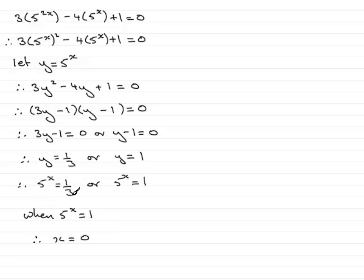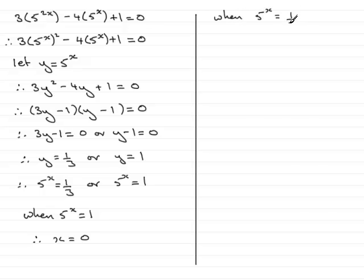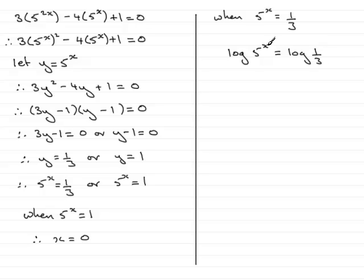Now we need to solve 5 to the power x equals 1 third. When 5 to the power x equals 1 third, to do equations like this, if we can't see what the power x is, what we can do is use logs — we can log both sides, say to base 10. So we write log of 5 to the power x equals the log of 1 third. By the power rule for logs, we can bring the x to the front, so x log 5 equals the log of 1 third.